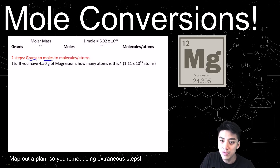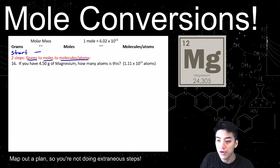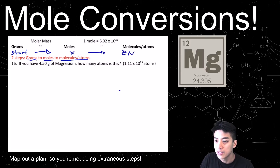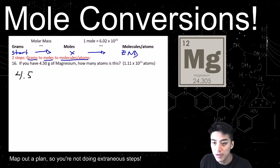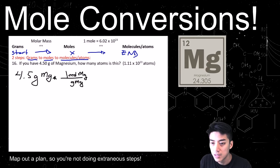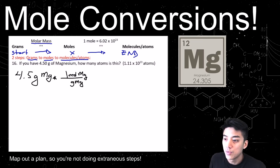This is a two-step problem where you start in grams, jump to moles, and then end on atoms — going from far left to far right on the chart. Write down 4.5 grams of magnesium. Times sign, draw a line. Put grams on the bottom so it cancels, and put 1 mole on top. 1 mole of magnesium weighs how much? The molar mass of magnesium is 24.3 grams — that's the square above.